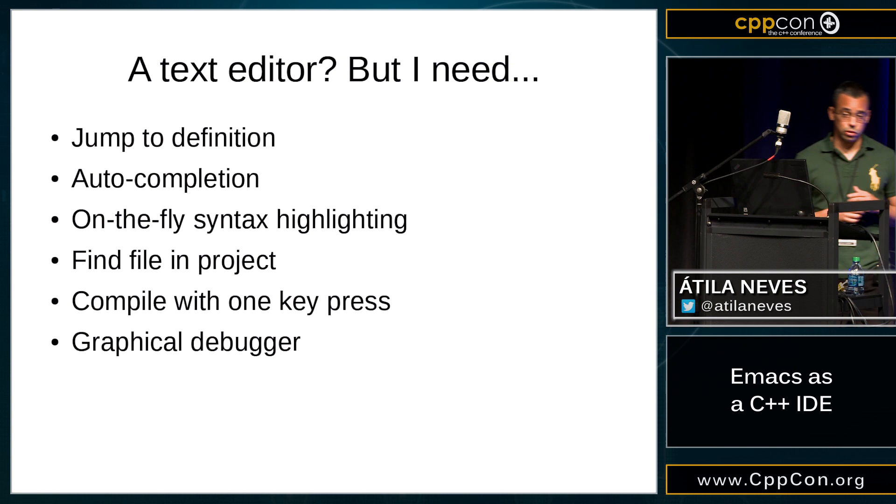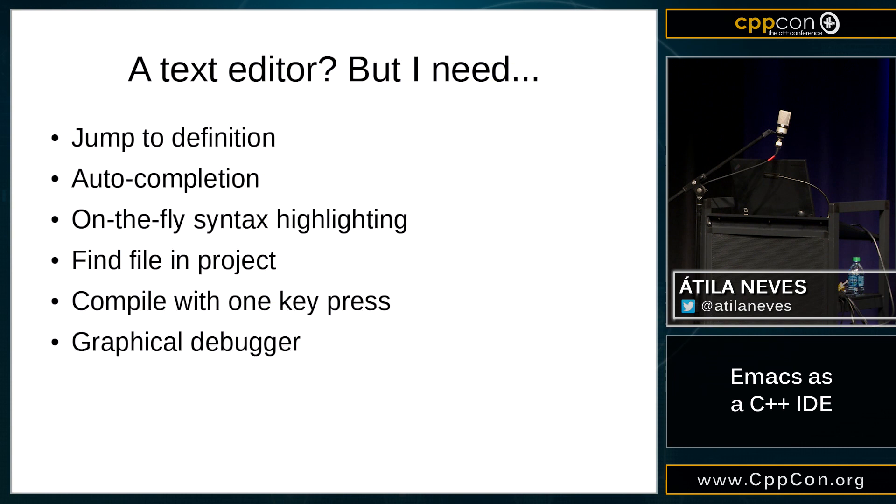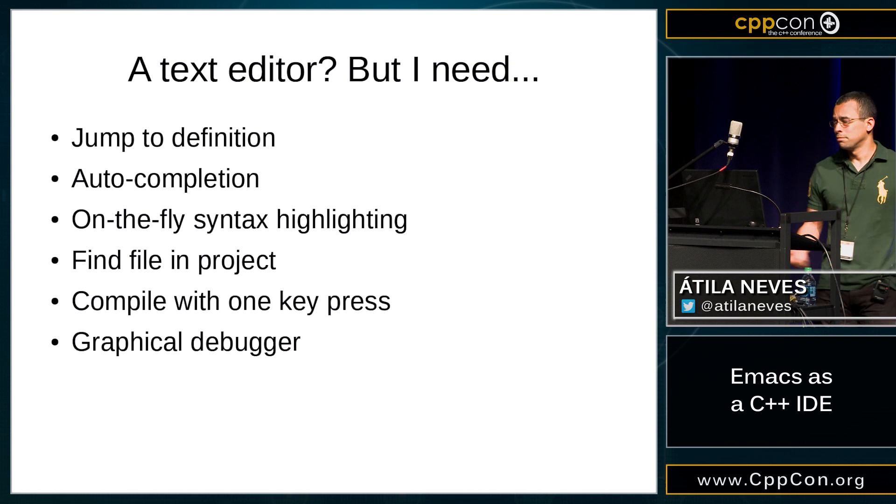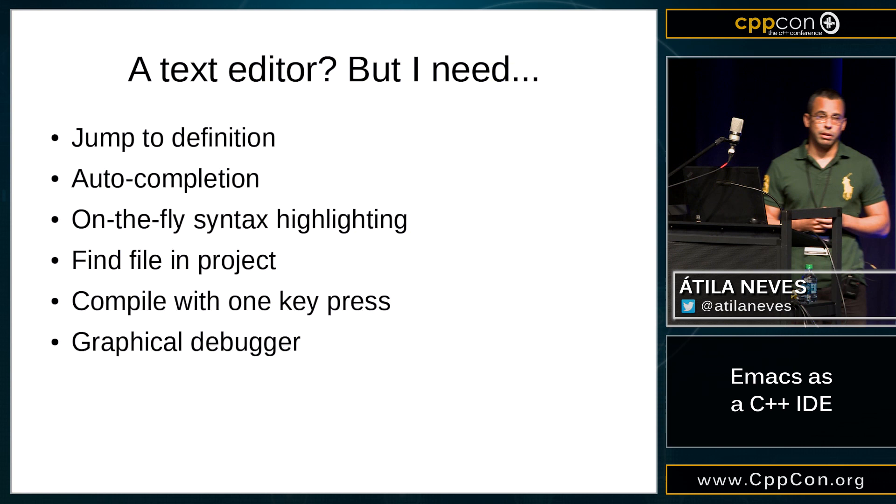Find file in project — I don't care what directory things are in; that's for the computer to know and me to find out. I just want to tell it the name of the file I want and have it go find it. I get funny looks at work when people keep telling me where things are; I just ask what it's called. Compile on one key press: not a big deal but important for some people. And graphical debugger — that's been in Emacs forever but hardly anybody uses it for some reason.